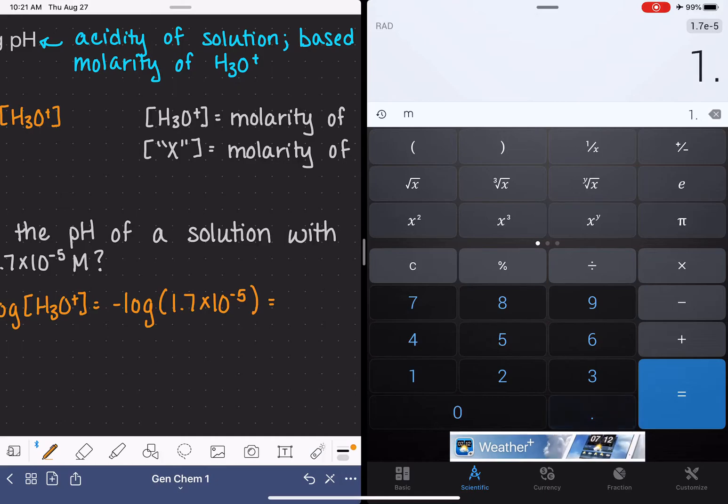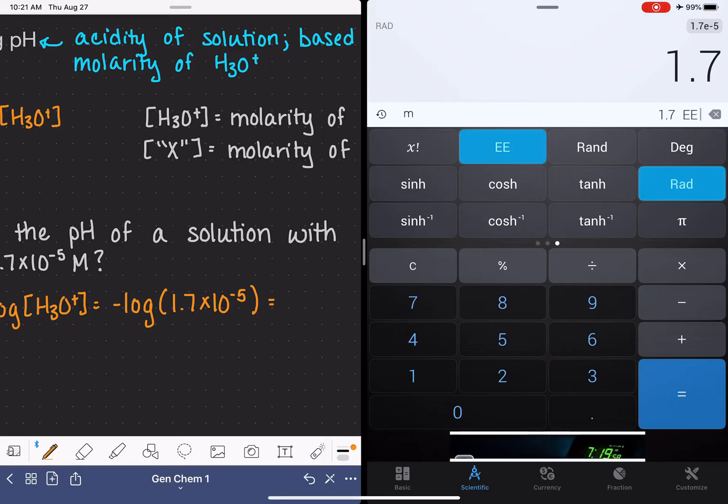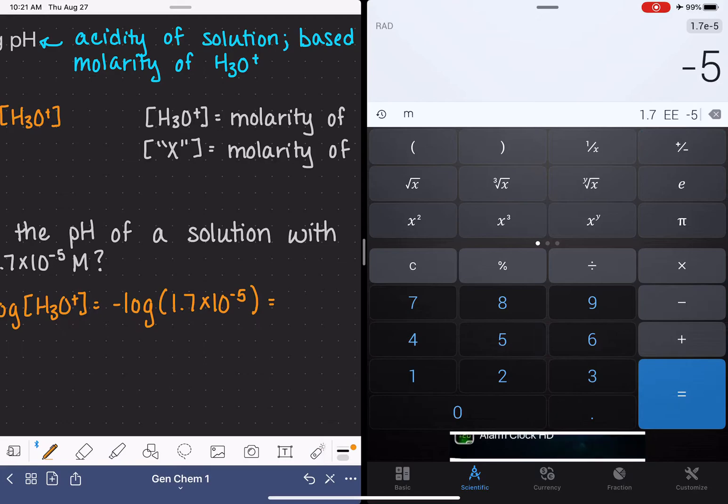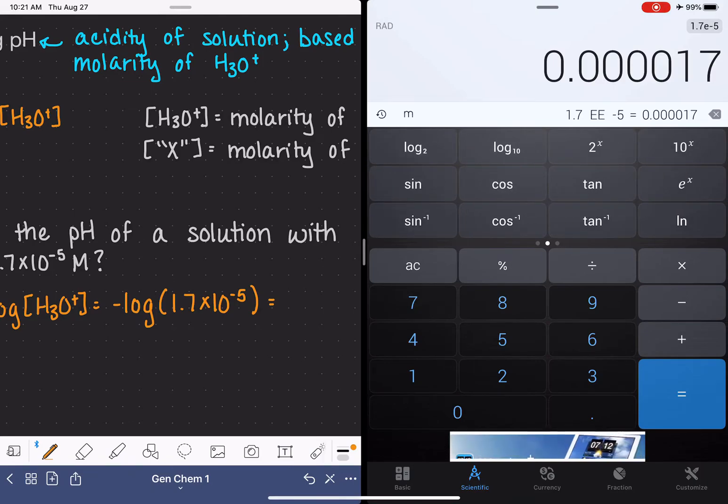You do want to make sure that you're using the correct logarithmic function when you're solving these types of problems. There are typically a few different options for the log. I've entered in the 1.7 times 10 to the minus 5. And now notice on my calculator, I actually have three different options for the log. We want to make sure that we're using log base 10. Definitely don't use the natural log LN.